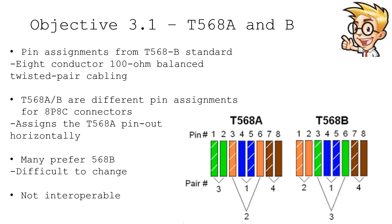If you look at an Ethernet RJ45 connector or a punch-down block used for Ethernet, you'll notice that there are two different standards addressed: 568A and 568B. These two standards provide us with the colors we'll use for these connectors. These connectors have eight positions and eight conductors. Most often, the 568 coloring scheme is associated with horizontal cabling, and in most organizations you'll probably find that connections for end users are using the 568B color standard.